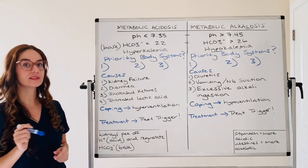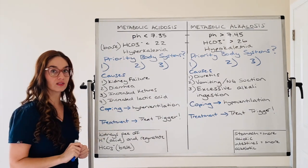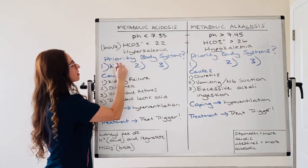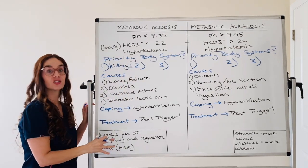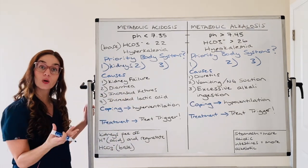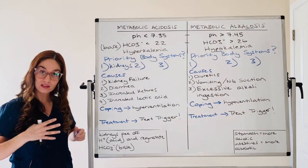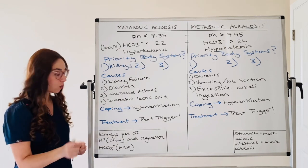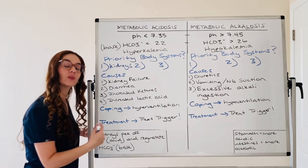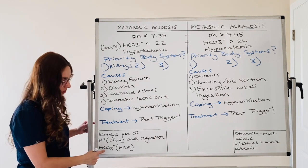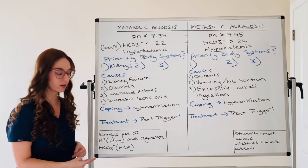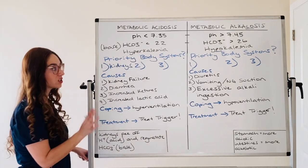What body systems are we going to think about with these disorders? The first one that should always pop to your head is kidneys. Our kidneys control acid and base. Your kidneys help excrete toxins — specifically they pee off hydrogen ion, which is an acid. So they help get rid of acid from the body. Your kidneys also have a role in reabsorbing base — they can regenerate or reabsorb bicarbonate, which is a base.